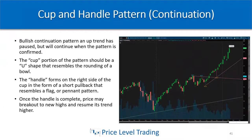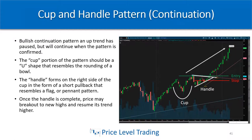Here's the QQQ — the technology ETF — on the weekly chart. Since we're on a longer timeframe, this pattern represents a more significant move once confirmed. You can see the cup — a pullback that formed a rounded bottom — and then several weeks leading up to it, a pennant pattern formed the handle on the cup before we eventually broke out of that pennant to the upside. There were two entry opportunities: on the breakout of the pennant with a stop below that weekly low, or waiting for the wick to come down and retest the tops of old resistance now support. Price then rallied up over the next few weeks to new all-time highs.